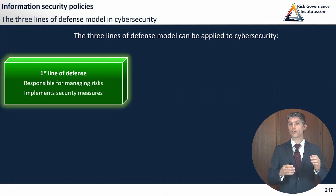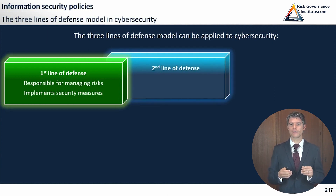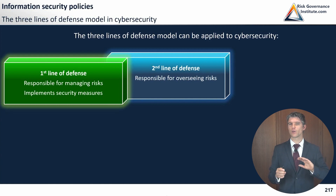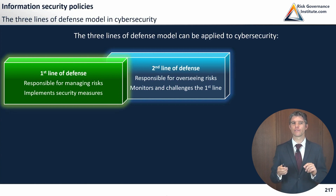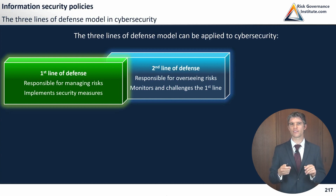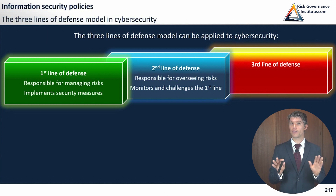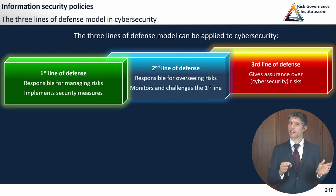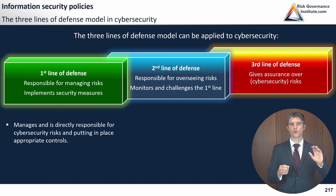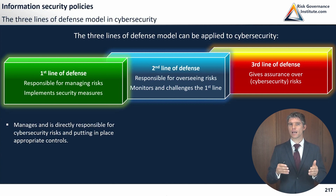The second line of defense is responsible for overseeing the risks, and as you know from this model, it monitors and challenges the first line of defense. This is typically the Chief Information Security Officer — we'll see more about this soon. The third line of defense, which you should be very familiar with, is internal audit, so it gives assurance over cybersecurity risks.